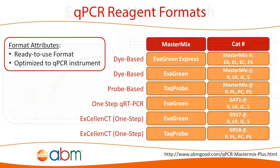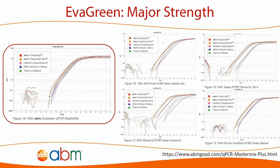Even if the synthesized cDNA is generated from different reverse transcriptases on the market, given that the RNA input is the same, our EvaGreen qPCR master mix gives comparable CTs across all samples, whereas other brands of master mixes aren't compatible with all the different reverse transcriptases tested, as indicated by the varying CT values across the samples.